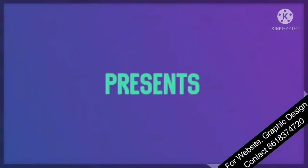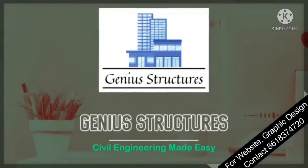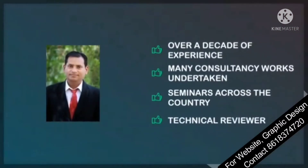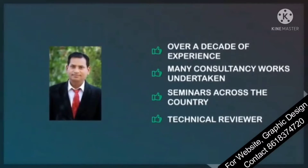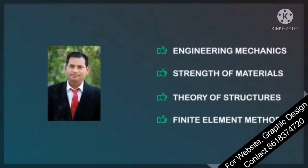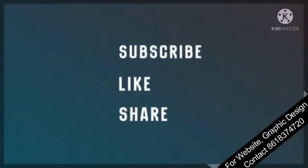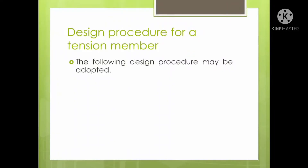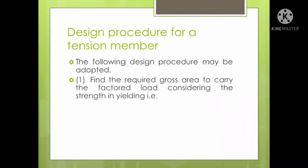Thank you for joining us. Now, in general, we will look at the overall design procedure for a tension member. This design procedure we can adopt as per the IS Codal provisions. The first step is to find the required gross area to carry the factored load considering strength in yielding, that is AG.